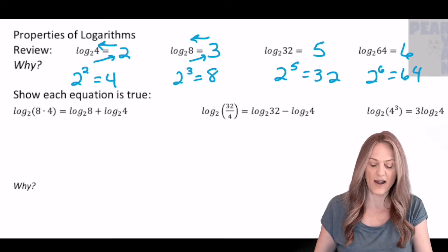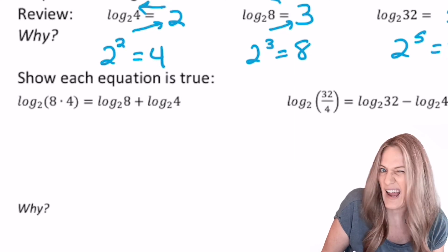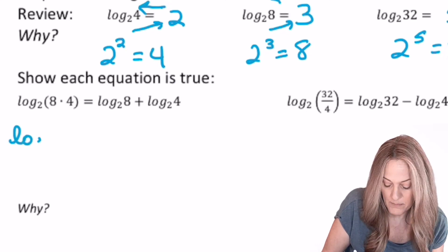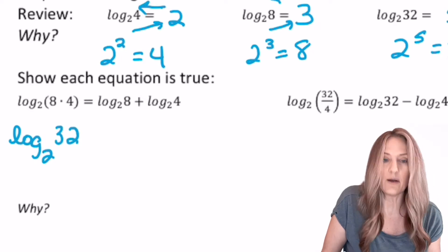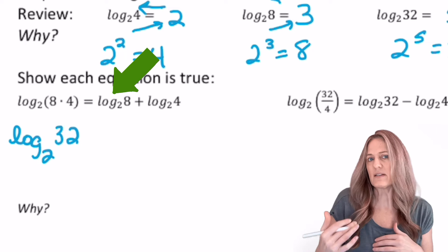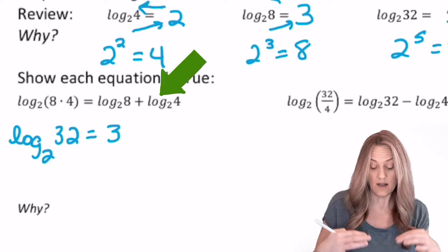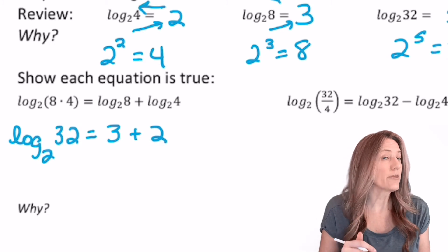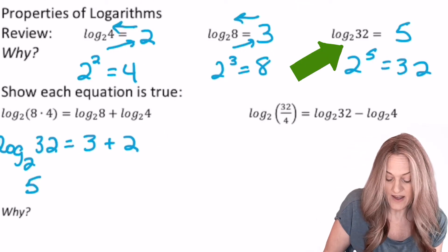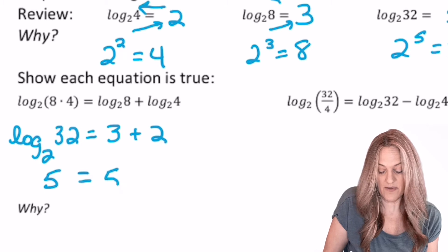So let's try. In this first one, I see log base 2 of 8 times 4, so I'll go ahead and multiply what's in the parentheses, get 32. Now on the other side, we have log base 2 of 8. Well, we know that's 3, and log base 2 of 4. We know that's 2. Now let's go to our next line. Log base 2 of 32. Well, we said that was 5, and 3 plus 2 is 5.